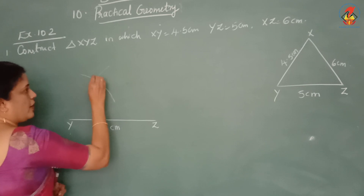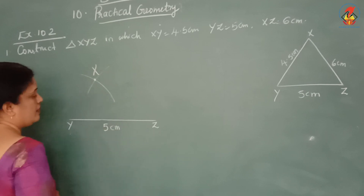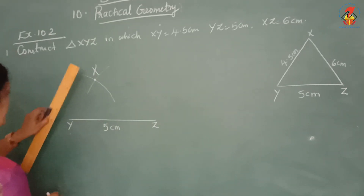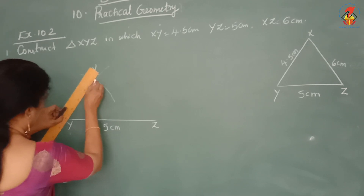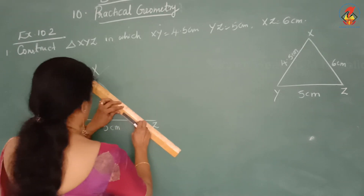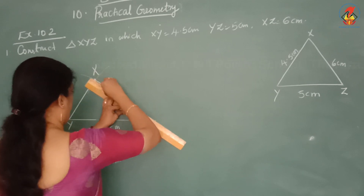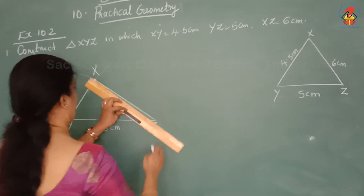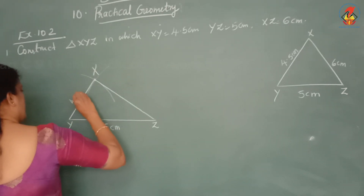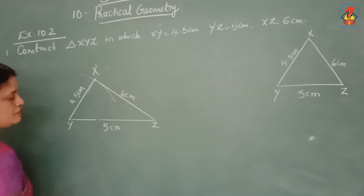The point where the two arcs meet, mark it as X. Then join XY and XZ. The sides measure 4.5 cm and 6 cm respectively, and triangle XYZ is now obtained.